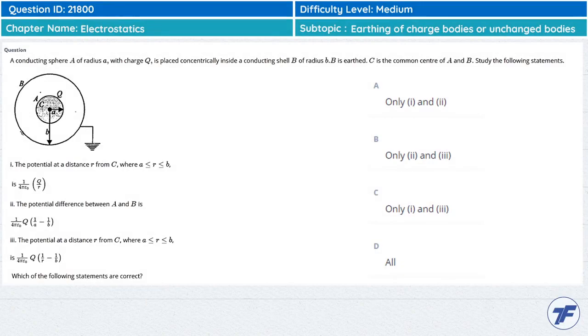A conducting sphere capital A of radius small a with charge capital Q is placed concentrically inside a conducting shell B of radius small b. C is the common center of capital A and capital B.